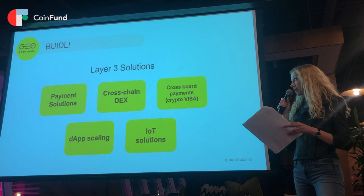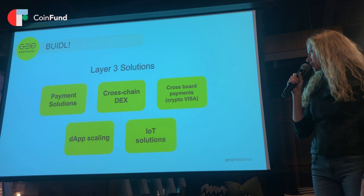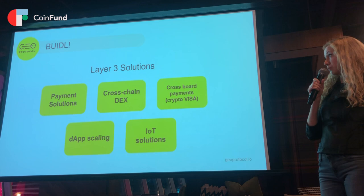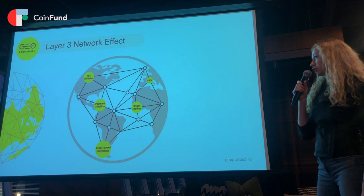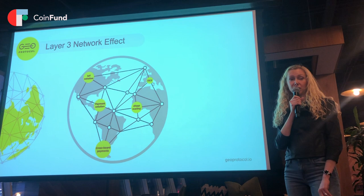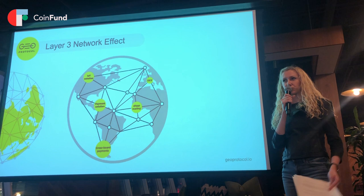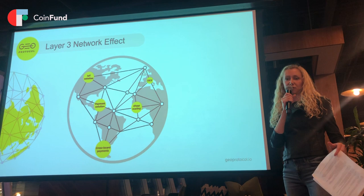Here are the key use cases layer three technologies can enable: payment solutions, cross-chain transactions, cross-border payments, debt scaling solutions, IT solutions, and we can expand to include voting systems, loyalty programs, and many more. But the key feature of the global internet of value would be the network effect — meaning each new participant, whether a user, a customer, or a financial or other institution joining the network, would give a huge incremental value to all existing participants of the network.